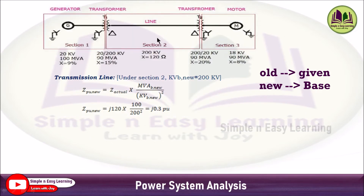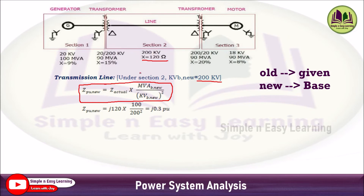The transmission line is in Section 2, which has a base KV of 200 kV and base MVA of 100. Since the reactance is given in ohms (120 Ω), a different formula applies: Z_pu(new) = Z_actual × MVAB_new / KVB_new². Substituting: 120 × 100 / (200)² = 0.3 per unit. This formula is used for transmission lines and cables when the actual impedance value in ohms is given.